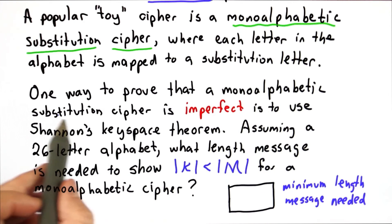One way to prove that a monoalphabetic substitution cipher is imperfect is to use Shannon's key space theorem, which says that the number of keys in a perfect cipher must exceed the number of messages or be equal to it.